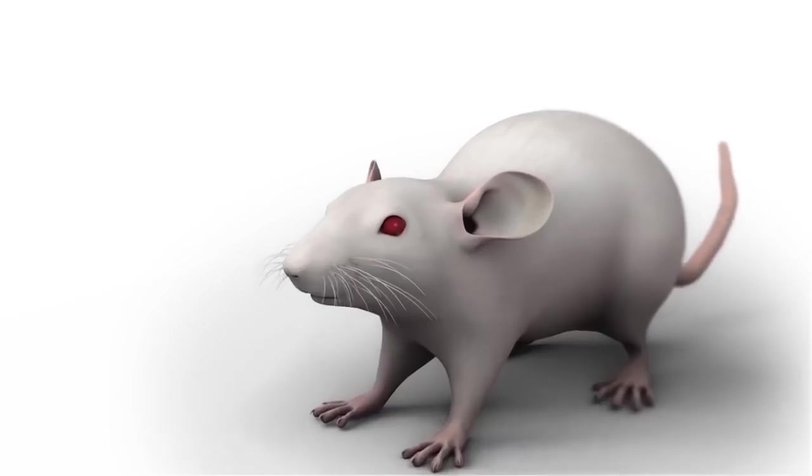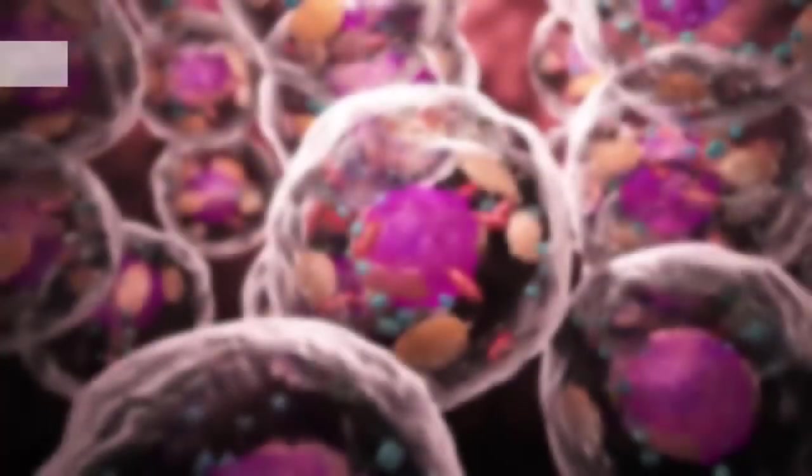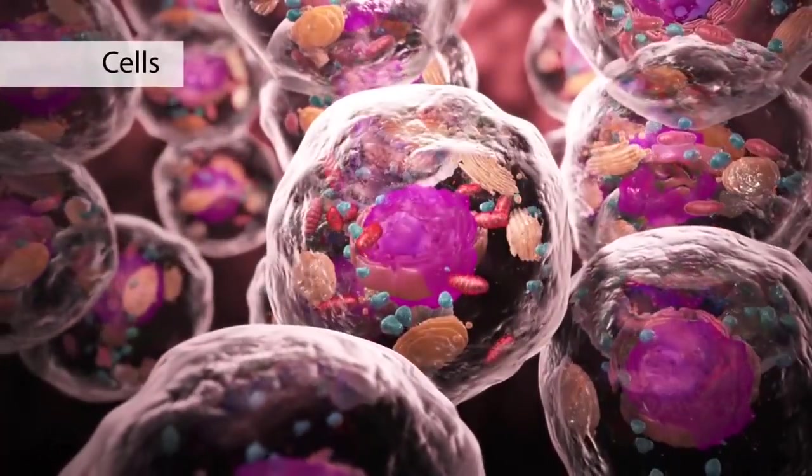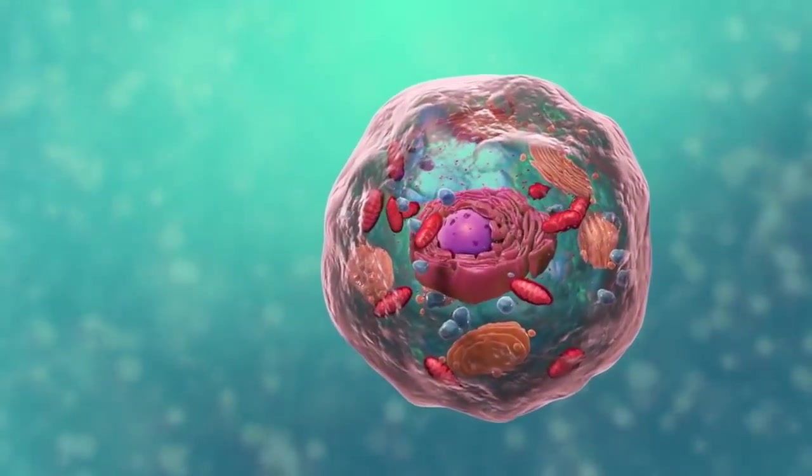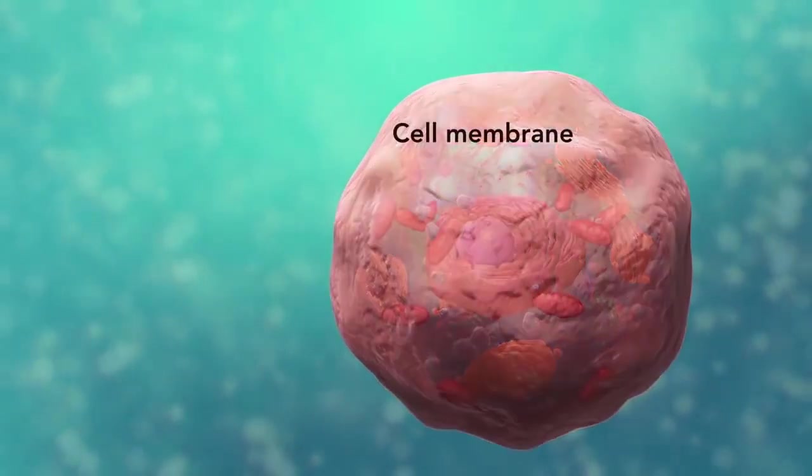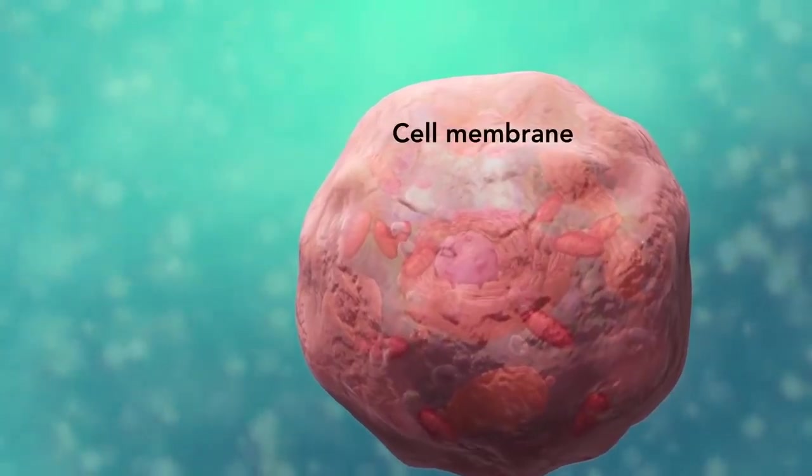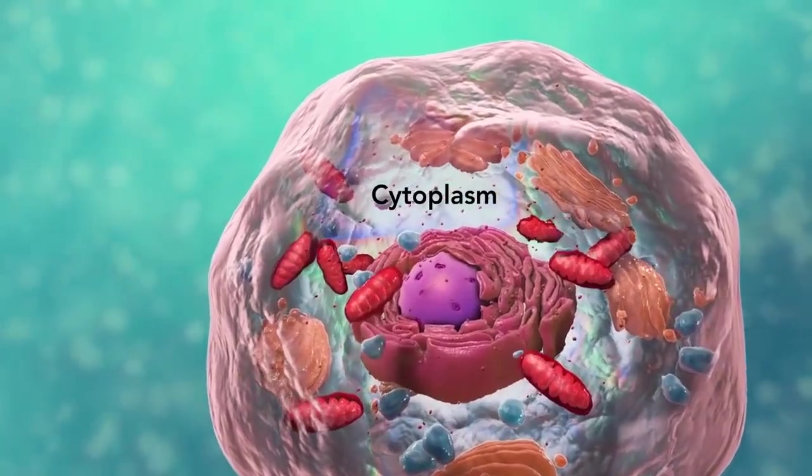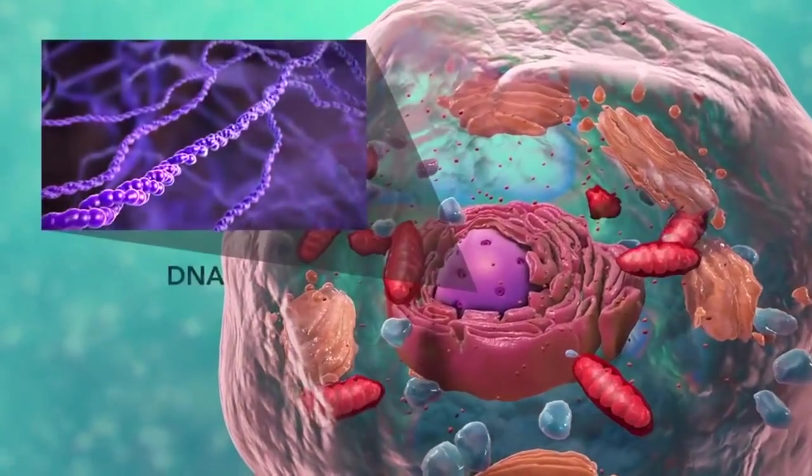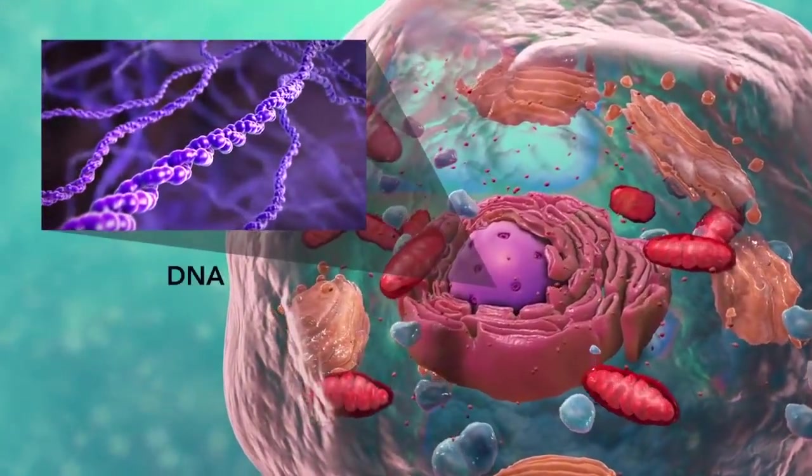Cells are the smallest living units of an organism. All cells have three things in common no matter what type of cell they are. All cells have a cell membrane which separates the inside of the cell from its environment, cytoplasm which is a jelly-like fluid, and DNA which is the cell's genetic material.